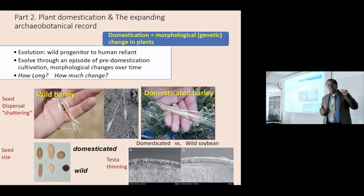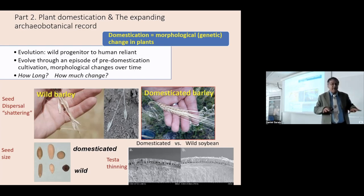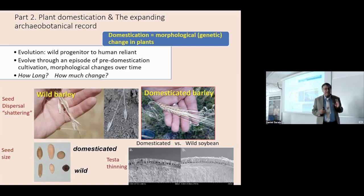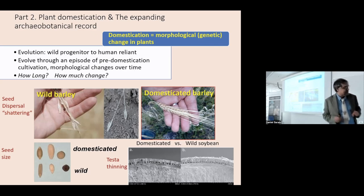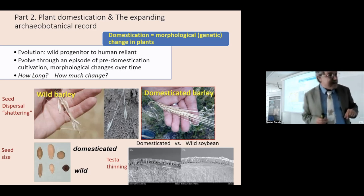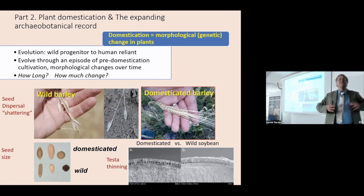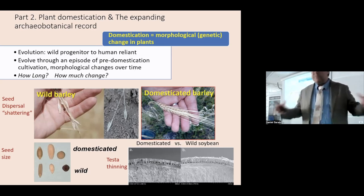We can study that through some of the morphological changes that come about as part of that process, which are underpinned by genetic changes. Another thing that changes with domesticated plants is seed size. Wild relatives tend to have smaller seeds, and domesticated plants tend to have larger seeds. Along the bottom: wild barley, wild melon, and wild pea; at the top some domesticated varieties. They're not necessarily bigger in all dimensions, but they're fatter.